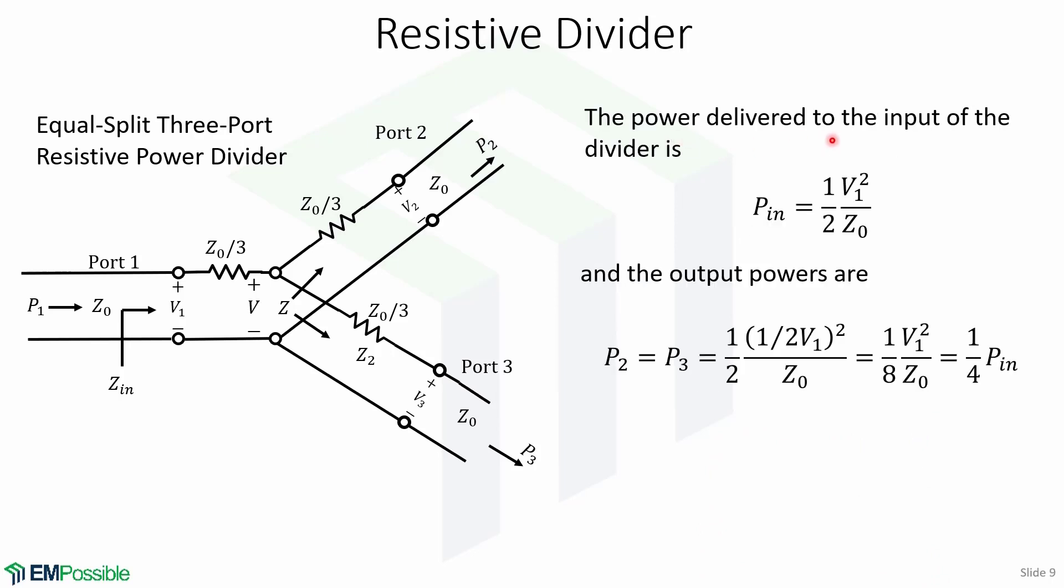Now, the power delivered to the input of the divider is given by this expression. P_in equals one half of V1 squared over Z0.